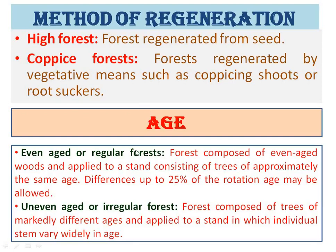On the basis of age, we have two types: even-aged or regular forest, and uneven-aged or irregular forest. Even-aged forest is composed of trees of approximately the same age, where a difference of up to 20% of the rotation age may be allowed. The gap between trees in uneven-aged forest can vary up to 25% of the rotation age. Uneven-aged or irregular forest is composed of trees of markedly different ages, where individual stems vary widely in age.